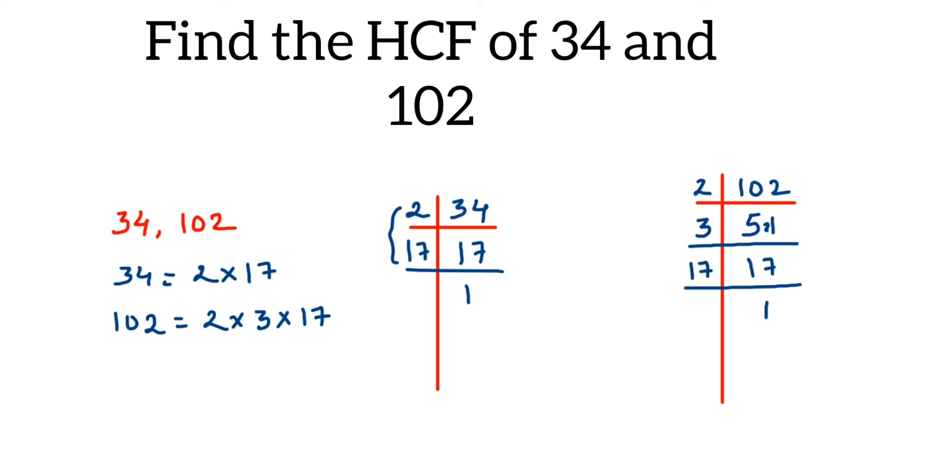Now, once we have expressed them in terms of prime factors, we have to take the common prime factors from both. Like from here we got one—this is common, like it's pairing up, right? And here we got this one, and this three is single, like it doesn't have any pair, so just leave it like that.